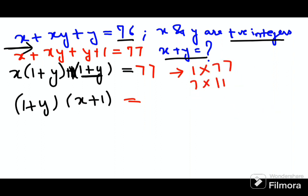Now if I put 1 × 77, so here either this becomes 1 and this becomes 77, or this becomes 77 and this becomes 1. Either way, if I substitute 1 + y = 1, therefore I'll get y value as 0.